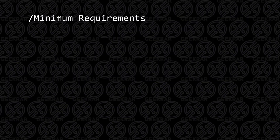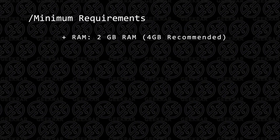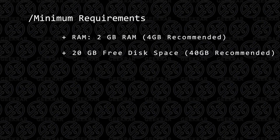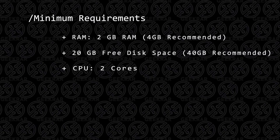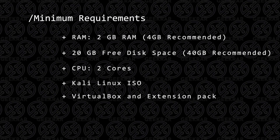Before we get started, let's take a look at the minimum requirements. For RAM, the lowest you can have is 2 gigs, with 4 recommended. You're going to want at least 20 gigs of hard disk space, 2 CPU cores, the Kali Linux ISO image file, and you're going to need VirtualBox and the extension pack.